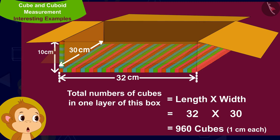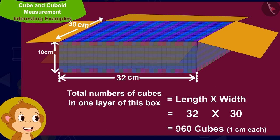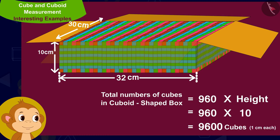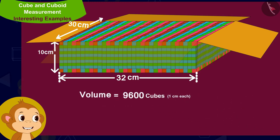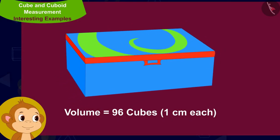The height of this box is 10 centimeters, which means there will be 10 such layers of cubes of dimension 1 centimeter each. The box will have a total of 960 times 10, which is 9600 cubes of dimension 1 centimeter each. In other words, the volume of this cuboid shaped box is equal to 9600 cubic centimeters.